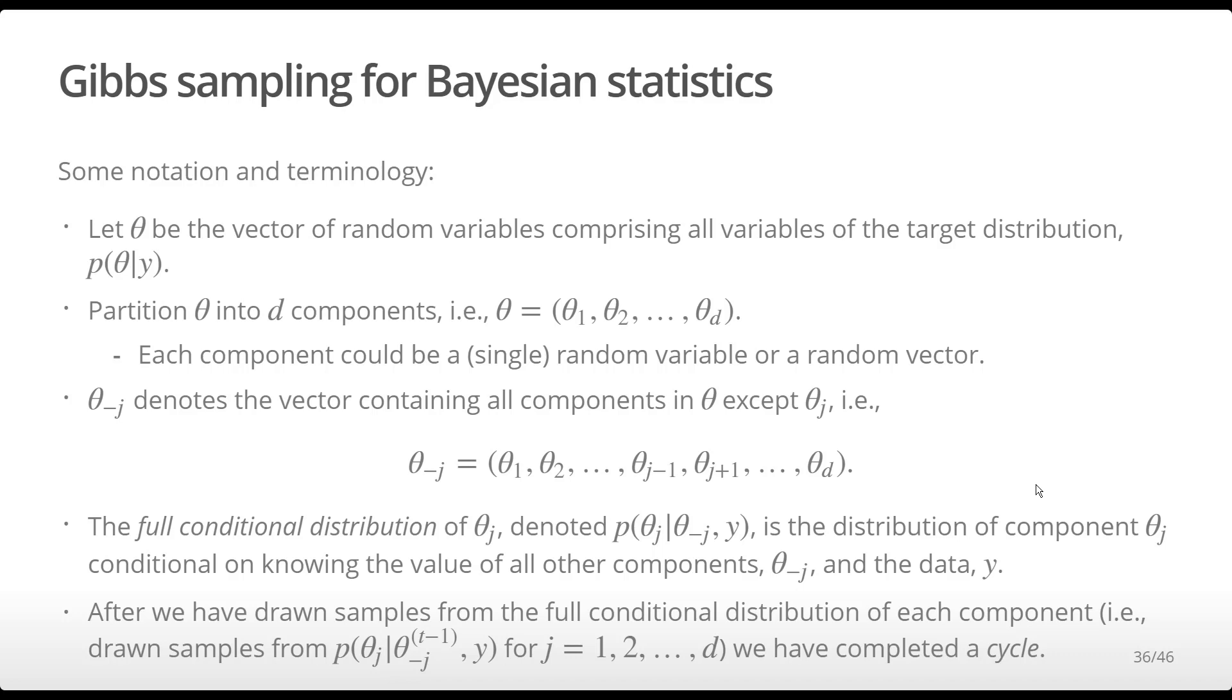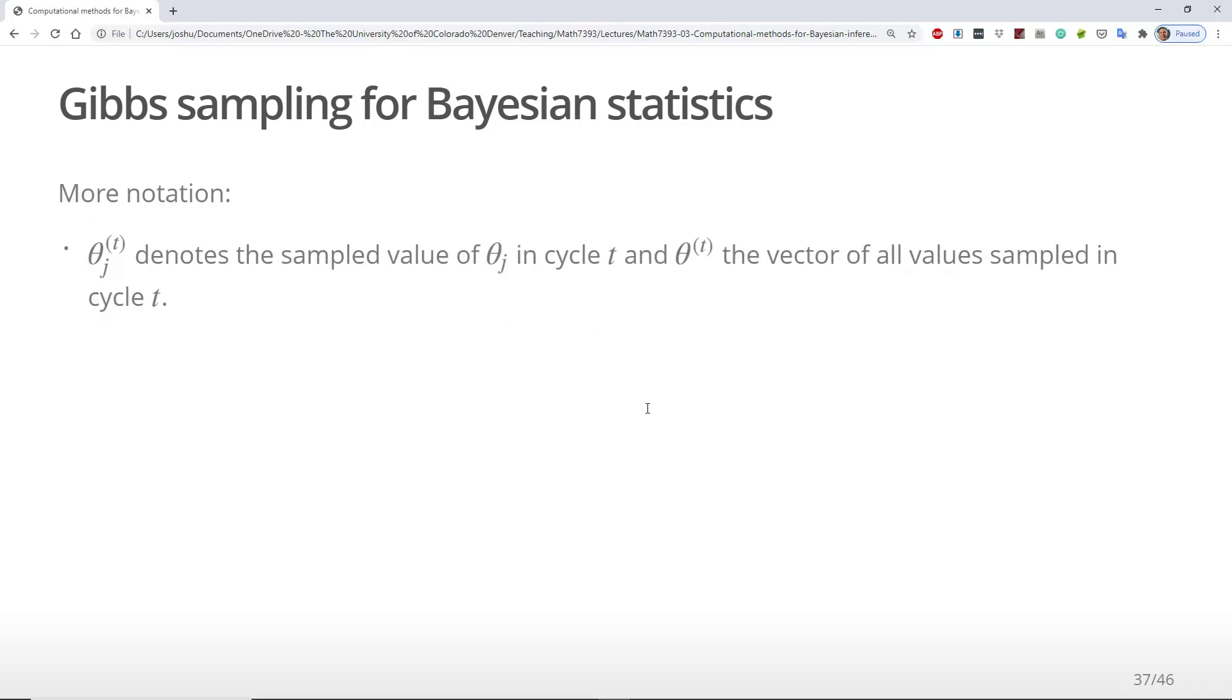Once we've completed drawing samples from the full conditional distribution for each of the d components, we've completed what is known as a cycle. Theta j with superscript t in parentheses will denote the sampled value of theta j in cycle t. Theta superscript t in parentheses will denote the value of all values sampled in cycle t.